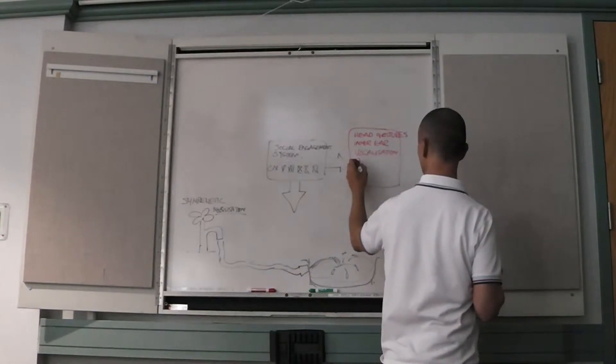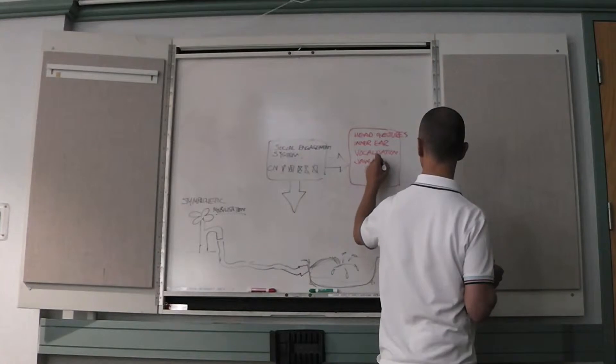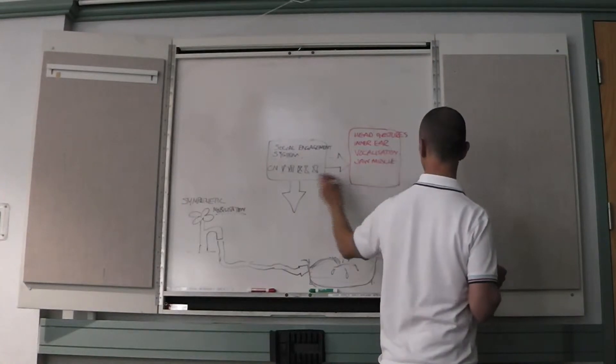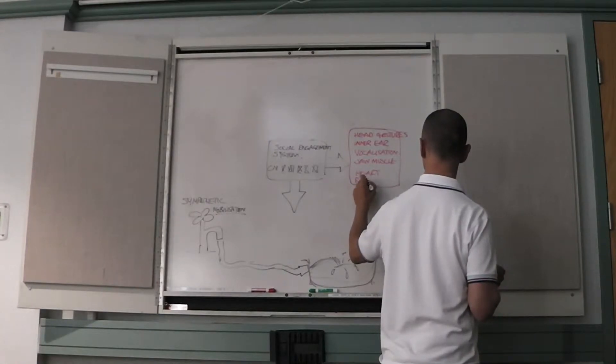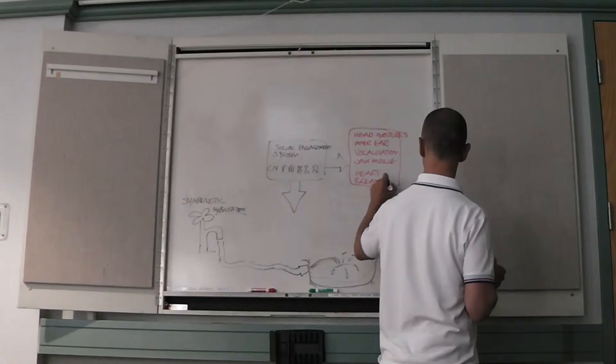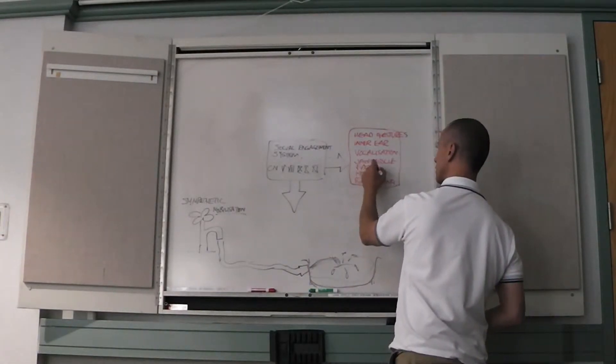They also control jaw muscles. And the vagus nerve controls the heart and breathing. Jaw muscles, face muscles, they control the muscles of facial expression. That's very important.